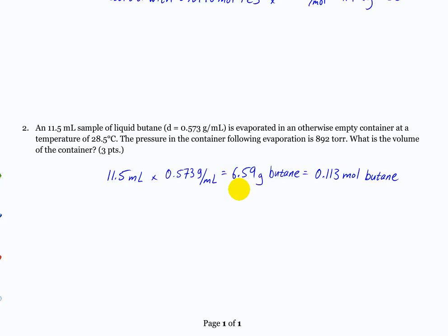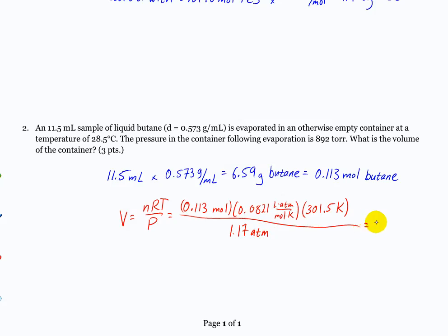So now we can solve using gas law. So this is going to be 0.113 moles. And the temperature here, 301.5 K. And our pressure is given 892 torr, that is 1.17 atmospheres. Multiply that out, and I got 2.39 liters.